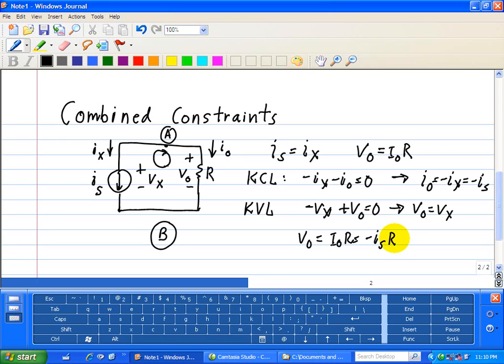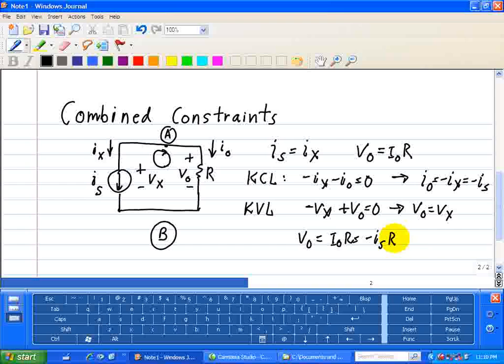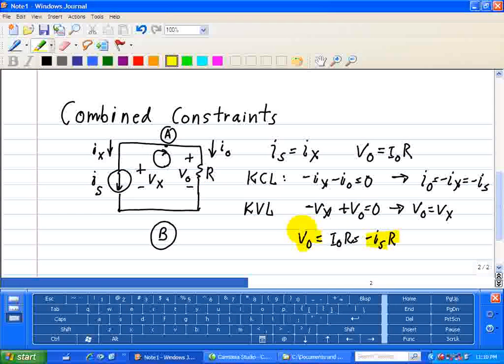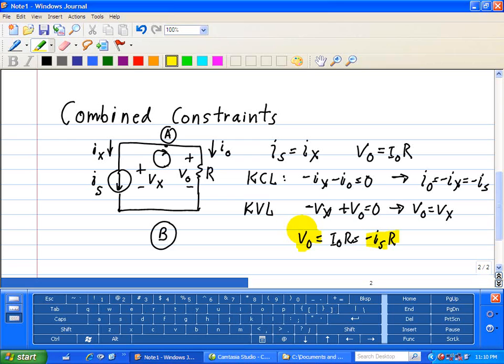This sign reversal is a result of the way we assigned our reference marks at the beginning of our analysis. The reference marks define the circuit input and outputs in such a way that IS and VO always have algebraic signs that are opposite. This equation is our input and output relationship, not an element IV relationship, but our circuit description of our input and output voltage.